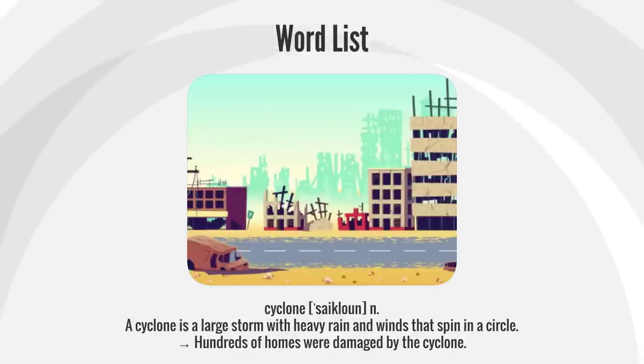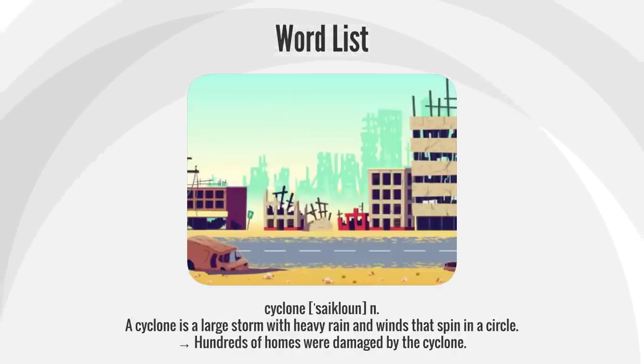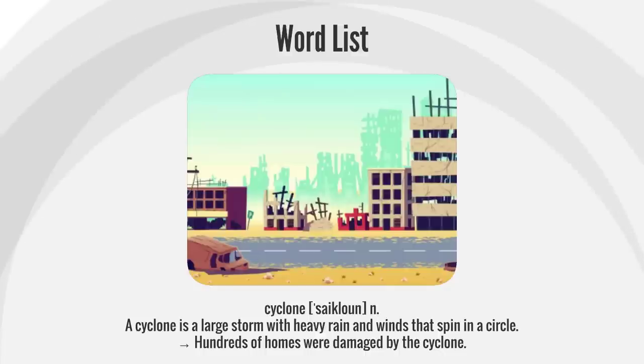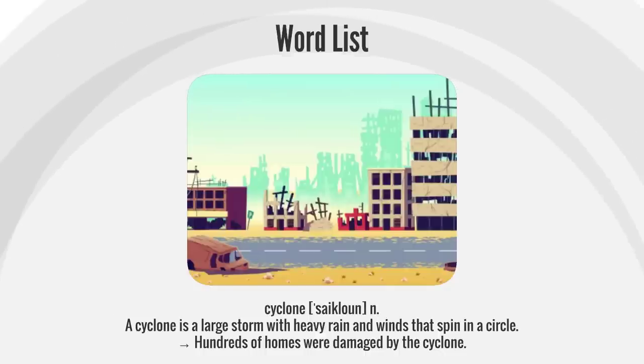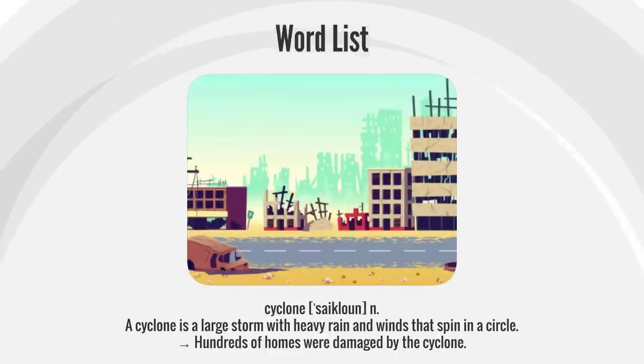Cyclone. A cyclone is a large storm with heavy rain and winds that spin in a circle. Hundreds of homes were damaged by the cyclone.